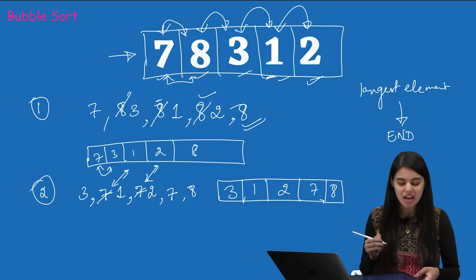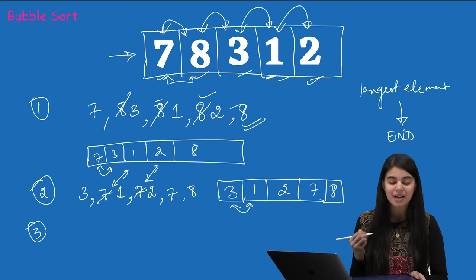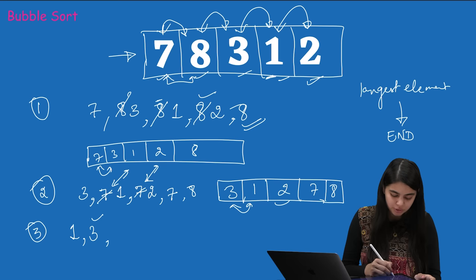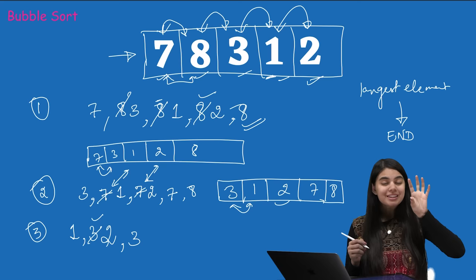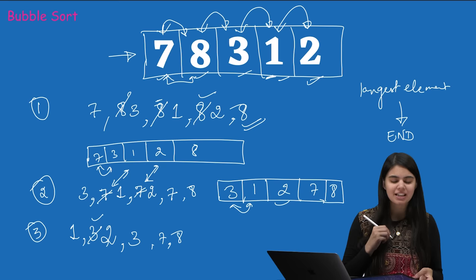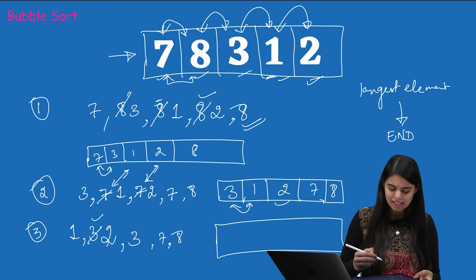In the third round of comparison, we compare 3 with 1 — 1 is smaller. Then compare 3 with 2 — 3 is bigger, so 2 comes forward. We don't need to compare 3 with 7 because the last two elements are already sorted. After the third pass, the array becomes 1, 2, 3, 7, 8.